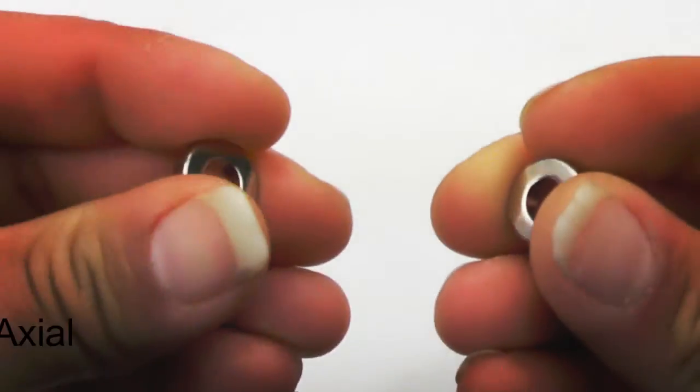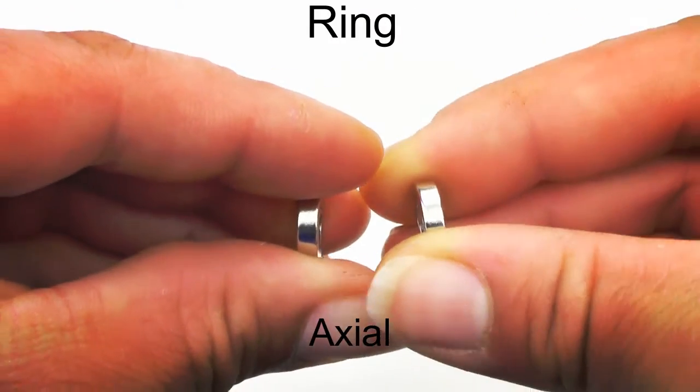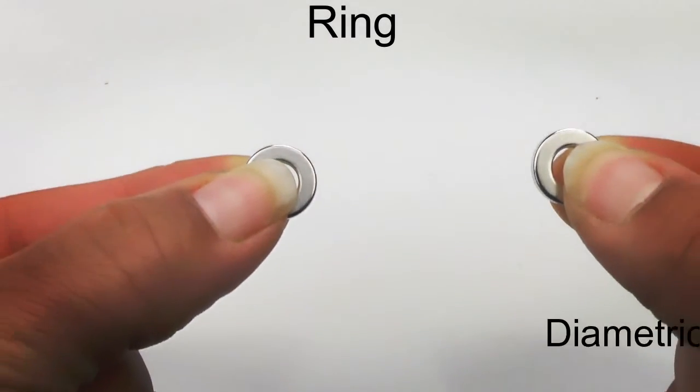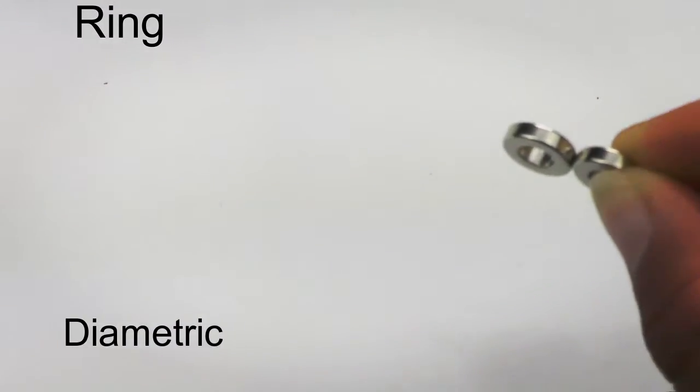Axial ring magnets are attracted to their flat, holed circle surfaces. Diametric rings are attracted to their round edges similar to diametric discs.